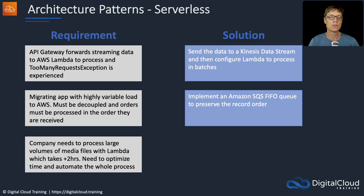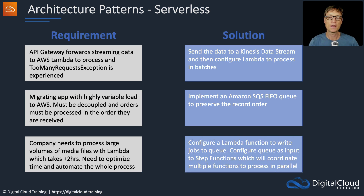A company needs to process large volumes of media files with Lambda and it takes over two hours — you need to optimize time and automate the whole process. You could configure a Lambda function to write jobs to a queue, where one function processes data sequentially and puts it into the queue. The queue then becomes an input for Step Functions, which coordinates a series of Lambda functions to process the data records in parallel.